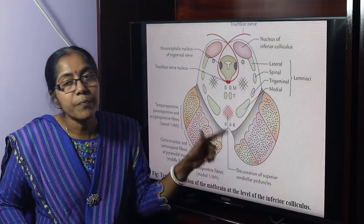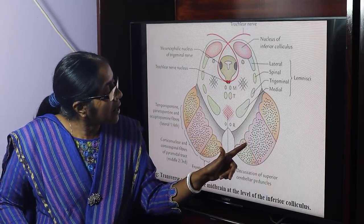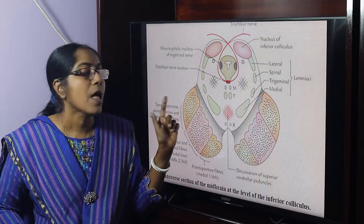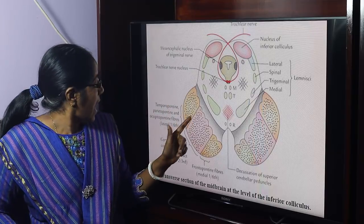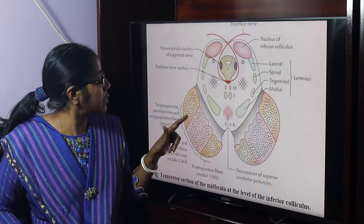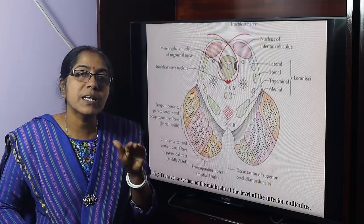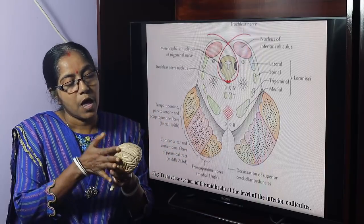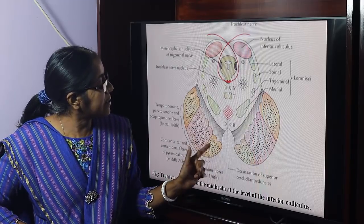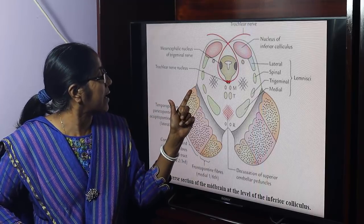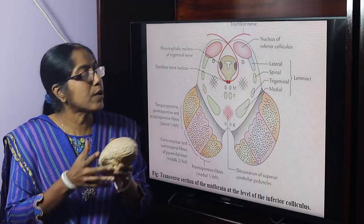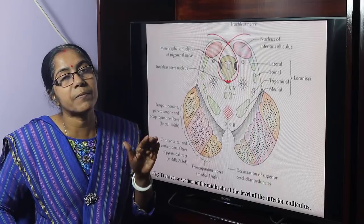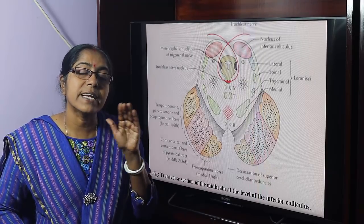The crus cerebri contains a number of descending tracts. The medial one-sixth is occupied by frontopontine fibers. The lateral one-sixth is occupied by parietopontine, occipitopontine, and temporopontine fibers. The middle two-thirds is occupied by the corticonuclear and corticospinal fibers — that is, the fibers of the pyramidal tract.